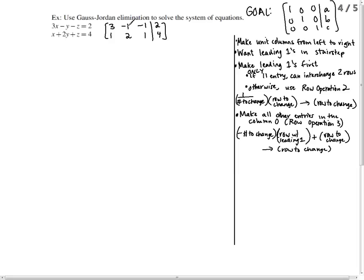Remember that each row in your new matrix came from an equation, and each column represents a variable or a constant. This is the x column, the y column, the z column, and this is the constants column.